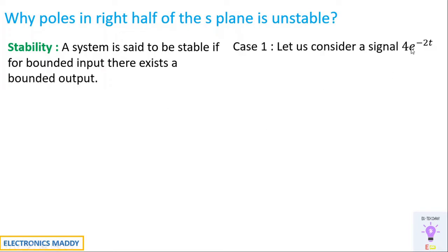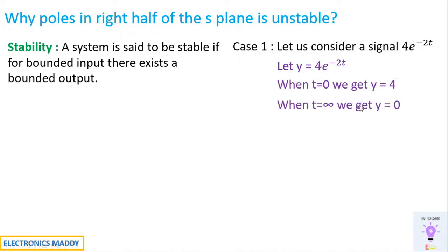Let us consider two cases. Case 1: consider the signal y = 4e^(-2t). When t=0, y = 4·e^0 = 4. When t=∞, e^(-∞) = 0, so y = 4·0 = 0. At t=0 there is a finite amplitude of 4, and at t=∞ there is a finite amplitude of 0, which is still a finite value.